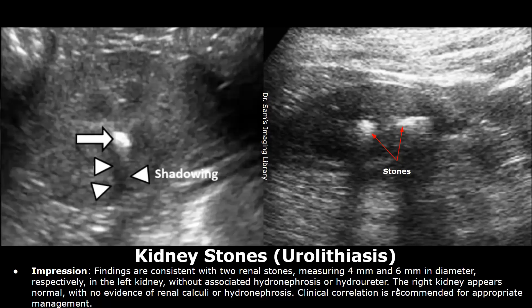In the impression, you can mention the presence of stones and their measurements and in which kidney they are found, and also mention any associated hydronephrosis or hydrouretor. After these lines, you can write about the other kidney. And in the end, you must write about clinical correlation.